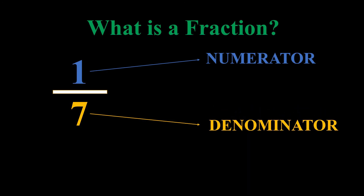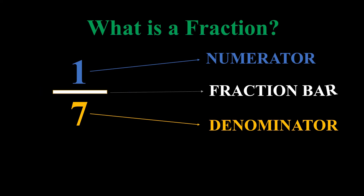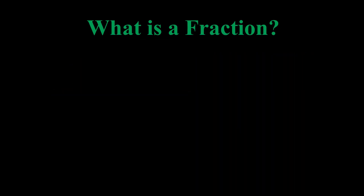Our denominator is the number at the bottom of the fraction. We also have our fraction bar, which is the horizontal line segment that separates the numerator from the denominator. So a fraction consists of a numerator, a fraction bar, and a denominator. Now let's look at the definition of a fraction.